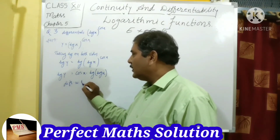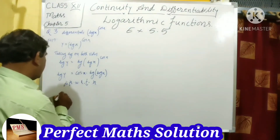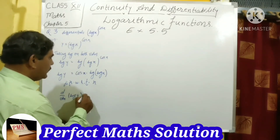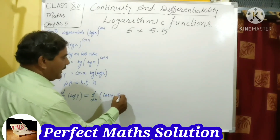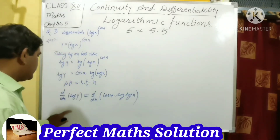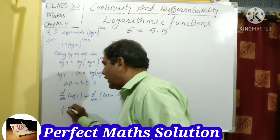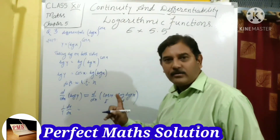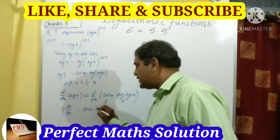Using the power rule, the power comes out front: log y equals cos x · log(log x). Now differentiate with respect to x. So d/dx of log y: derivative of log y is 1/y · dy/dx. This equals, by using the product rule of differentiation, with cos x as the first term and log(log x) as the second term.